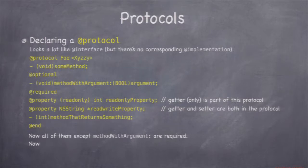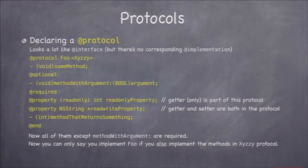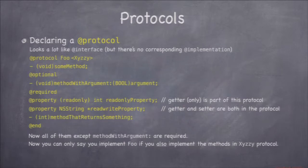You can make some methods optional by putting @optional in the protocol. Everything after that keyword becomes optional. You can also put @required again further down to switch back. So in a sample protocol, some methods might be required and some optional. You can also have a protocol inherit from other protocols using angle brackets after the protocol name — for example, @protocol foo <X, Y, Z> means implementing foo also requires implementing all required methods of X, Y, and Z.